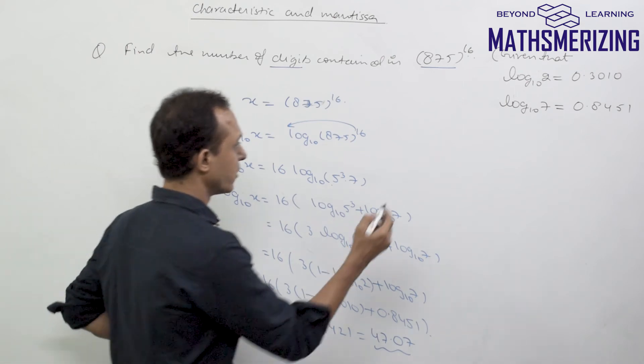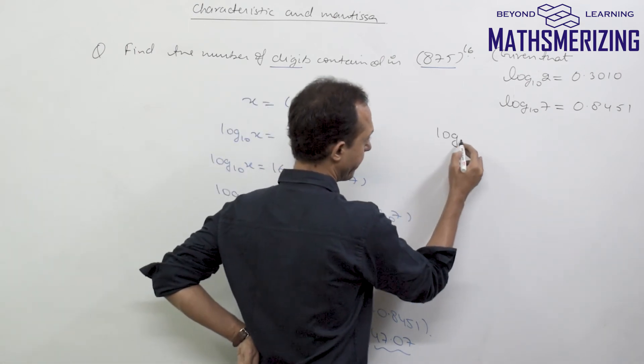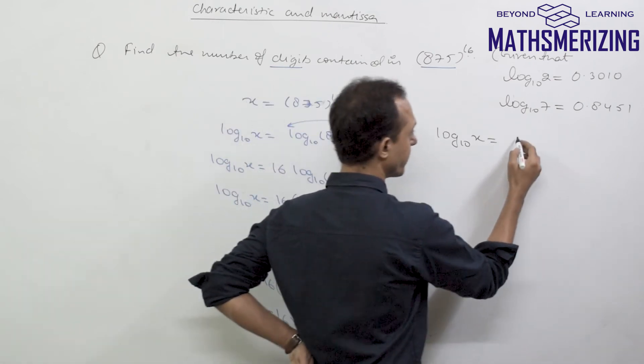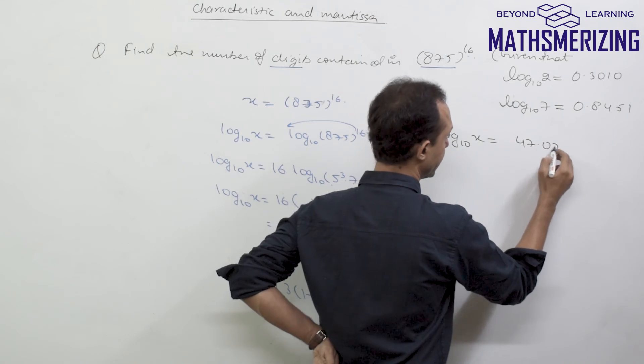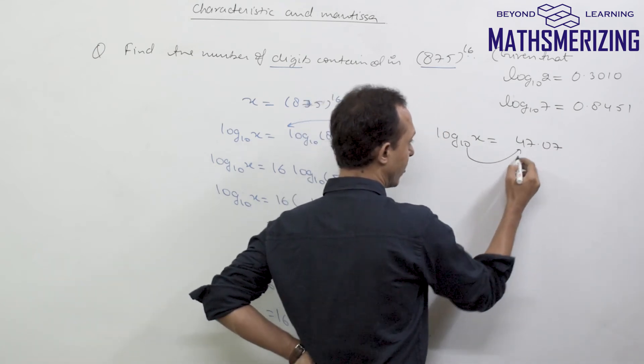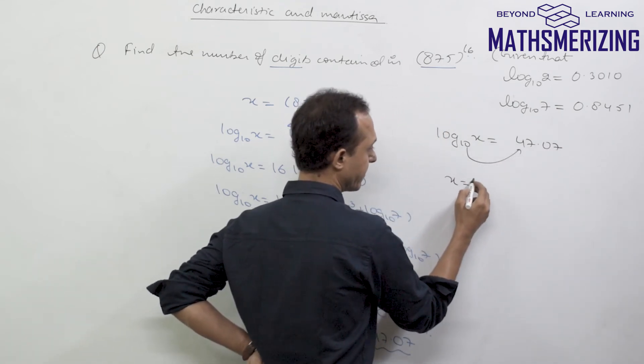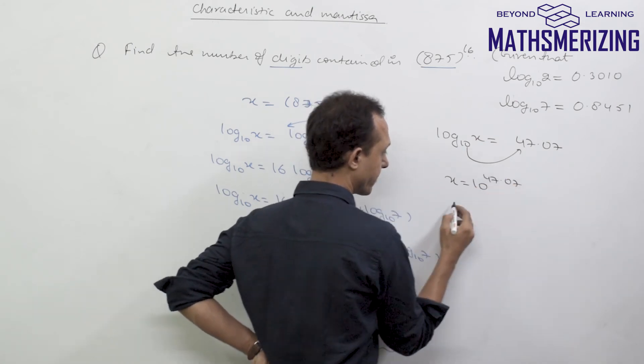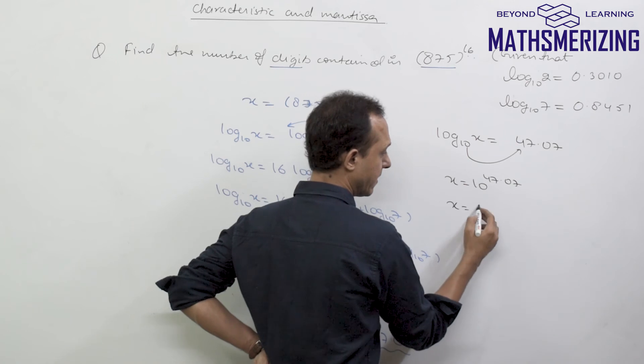So I can write log X to the base 10 is 47.07. Now if I take antilog, I can write X as 10 to the power 47.07.